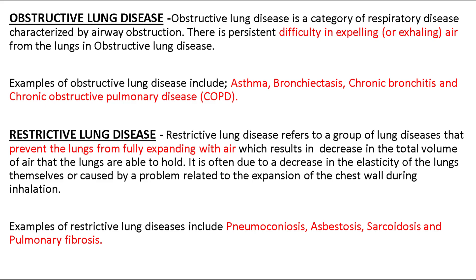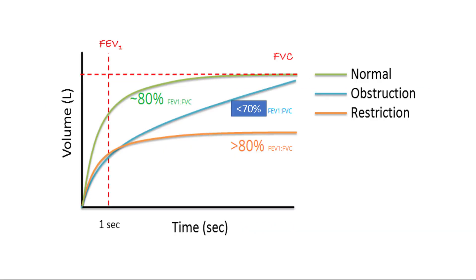Next, we will discuss restrictive lung disease. Restrictive lung disease refers to a group of lung diseases that prevents the lungs from fully expanding with air, resulting in a decrease in total volume of air the lungs are able to hold. It is often due to decreased elasticity of the lungs themselves or caused by a problem related to expansion of the chest wall during inhalation. Examples include pneumoconiosis, asbestosis, sarcoidosis, and pulmonary fibrosis.